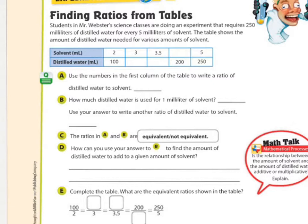Students in Mr. Webster's science classes are doing an experiment that requires 250 milliliters of distilled water for every 5 milliliters of solvent. The table shows the amount of distilled water needed for various amounts of solvent. So this information here is here on the table, and you can use this to help you fill out the rest of it.